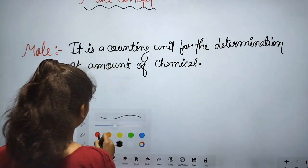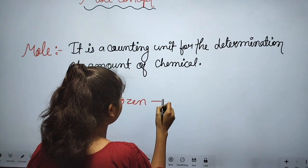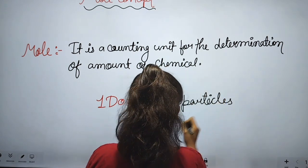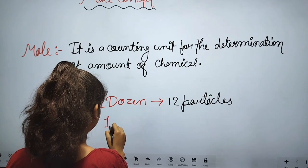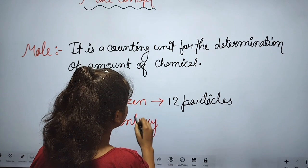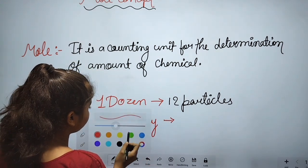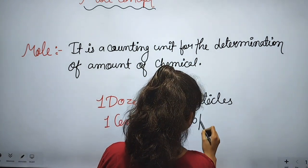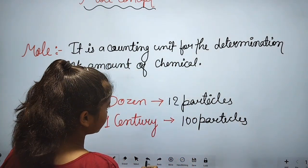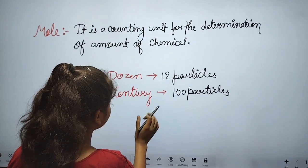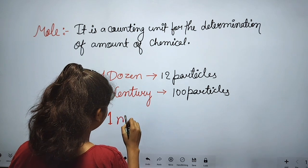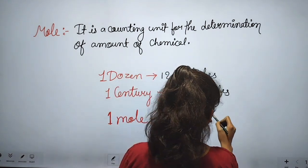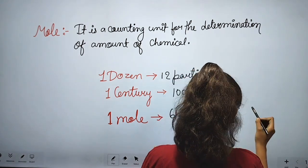We all know that in one dozen there are 12 particles, and in one century there are 100 particles — this is also a counting unit for the determination of amount. In the same way, in one mole there is 6.022 into 10 to the power 23 particles.